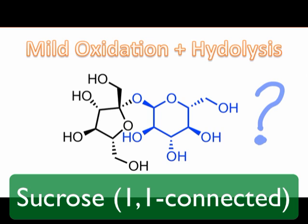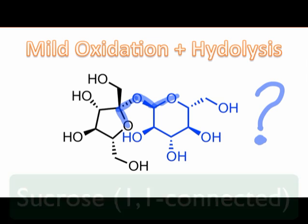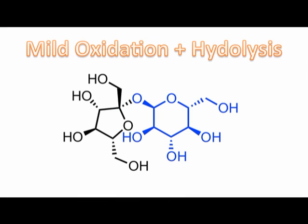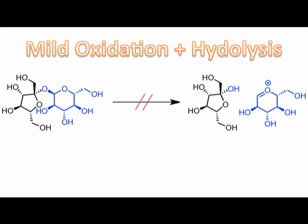In this situation, both anomeric positions are part of acetal functional groups, and there are no hemiacetals present in the molecule. This means that opening to form an oxidizable aldehyde is not possible. In fact, the only opening possible would produce an oxocarbenium ion, which is unlikely under these mild conditions.